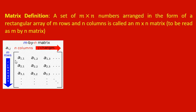Here you can see that I have elements like a11, a12, a13, a21, a22 and so on. Now these horizontal lines which you are seeing are called rows — so 1, 2, 3, and so on — I have m rows. And these vertical lines are called columns — so 1, 2, 3 etc are the columns. This is how we represent an m by n matrix.